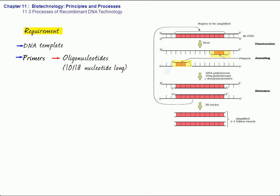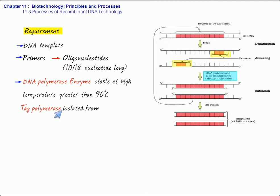Besides that, currently, we need a special DNA polymerase enzyme, which is stable at a high temperature, greater than 90 degrees. And this enzyme is Taq polymerase. This has been isolated from the hot spring bacterium Thermus aquaticus. So, these are the requirements.